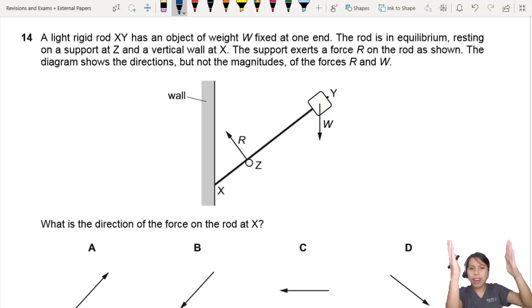Here you have a rod at a very weird angle, fixed at one end. The rod is in equilibrium and this is a very important clue. Resting on support Z and vertical wall.